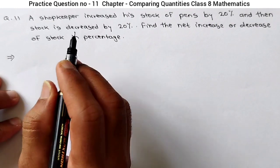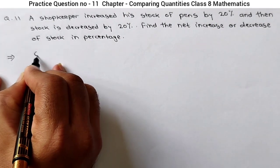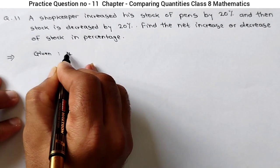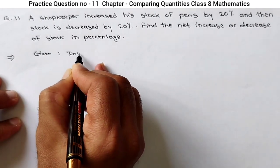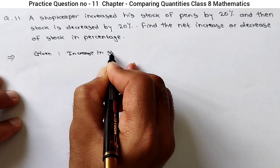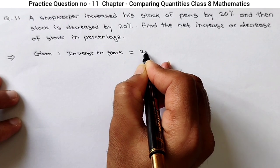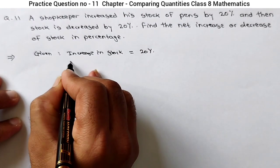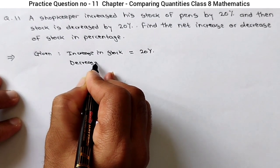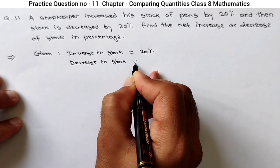What is given here? The increase in stock and decrease in stock are the only things given. So I will write: given is increase in stock — 20% — and decrease in stock. Only these two things are given.